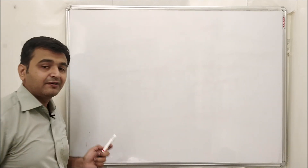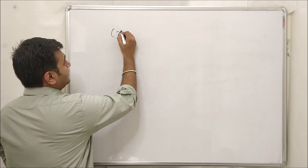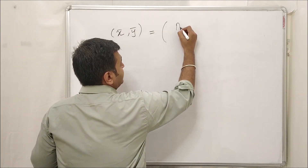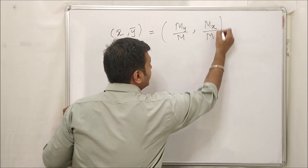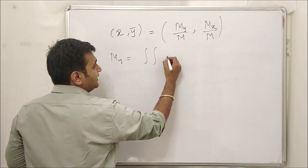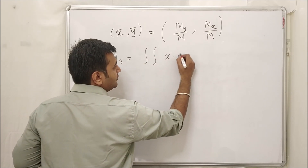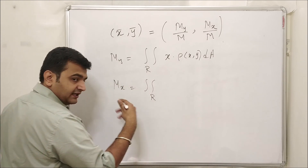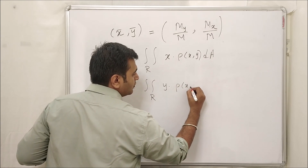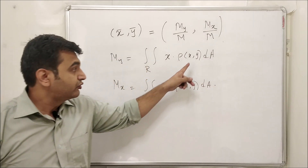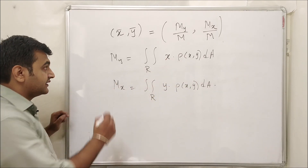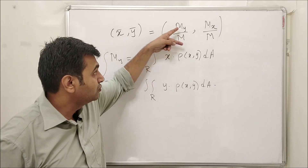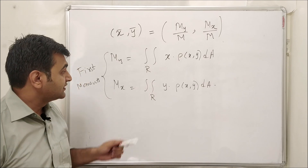To find the center of mass (x̄, ȳ) for a region in ℝ², we use: x̄ = M_y / m and ȳ = M_x / m. The first moment M_y is the double integral of x·ρ(x,y) dA, and M_x is the double integral of y·ρ(x,y) dA — note the subscripts are opposite to the variable used. M_x and M_y are called the first moments. Dividing by the mass m gives you the center of mass.